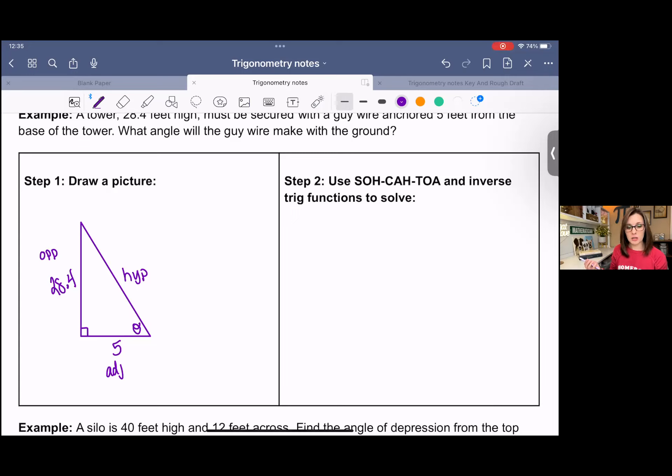We have opposite and adjacent, so that's going to be tangent. So we can say tangent of theta is opposite over adjacent, which is 28.4 over 5. And then since we're solving for theta, we're going to use inverse tangent.